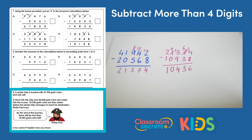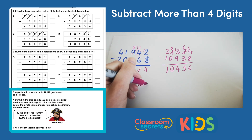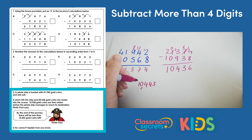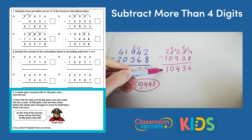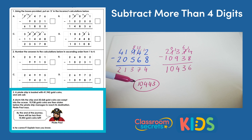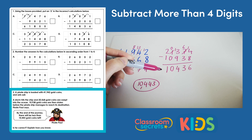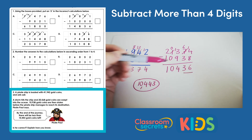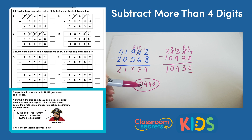Now let's think back to what he said — he said by the end of the journey there will be less than 10,443 gold coins. Is 10,436 less than 10,443? Yes it is. We know this because 10,436 is smaller than 10,443, so Pirate Paul is correct — at least he's got that, even if he is short a few coins!